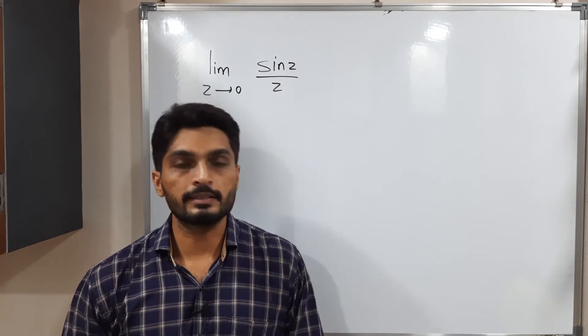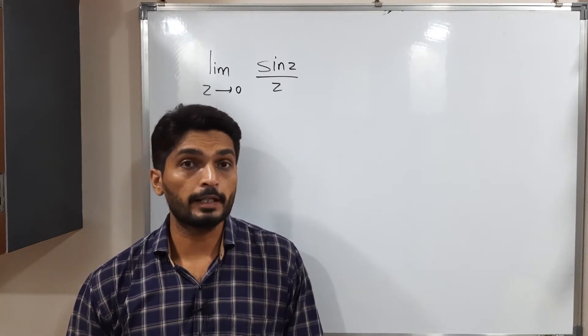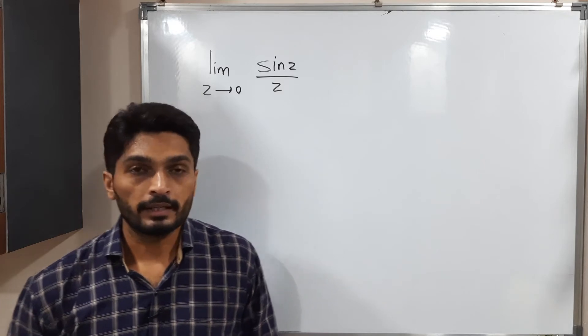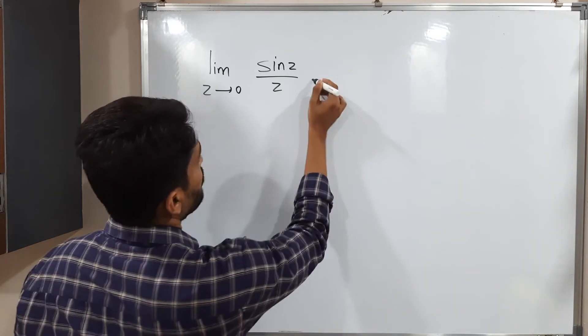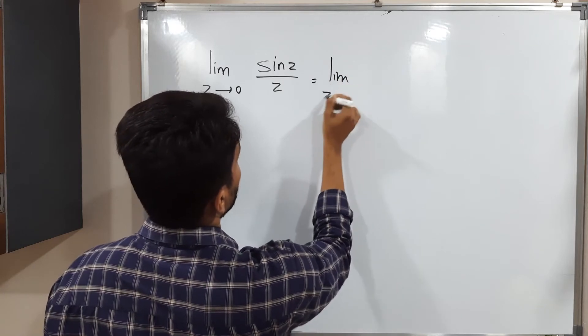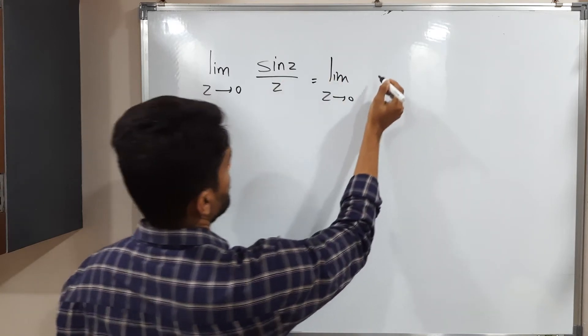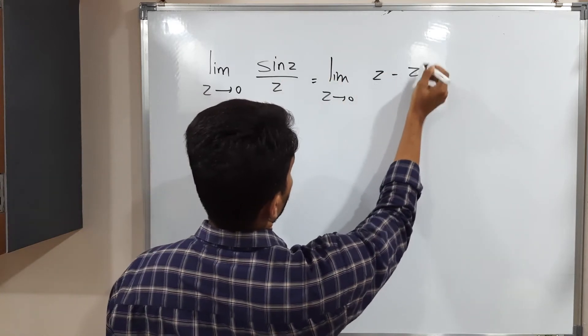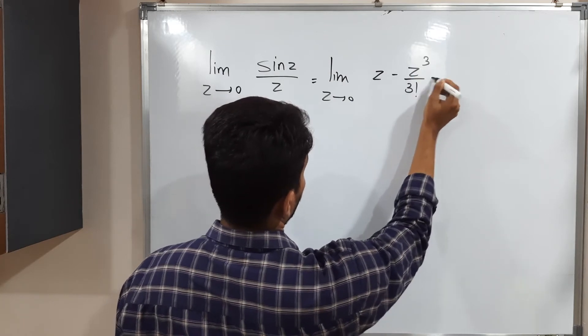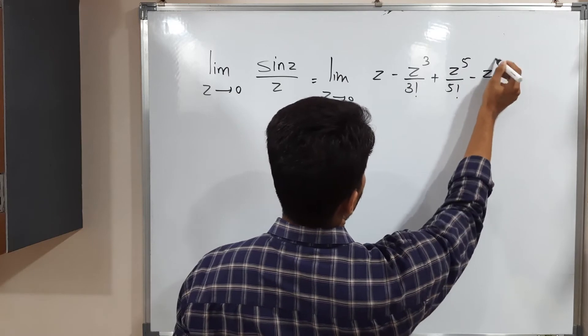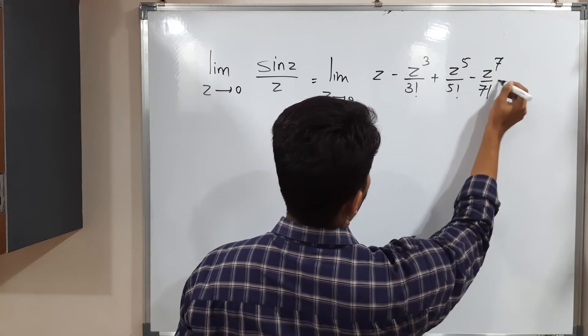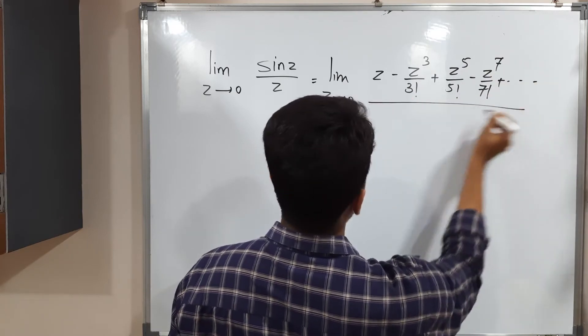Let us discuss this second example. So here we have to find limit z tends to 0 sin z upon z. Here also I am going to use the series of sin z. You are familiar with the series of sin z: it is z minus z cube by 3 factorial plus z raise to 5 by 5 factorial minus z raise to 7 by 7 factorial and so on. Now divide it by z.